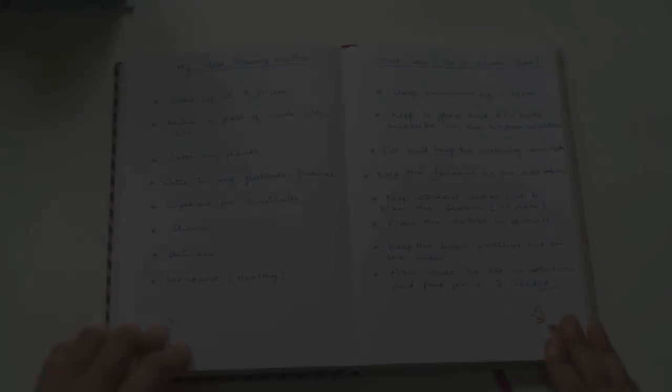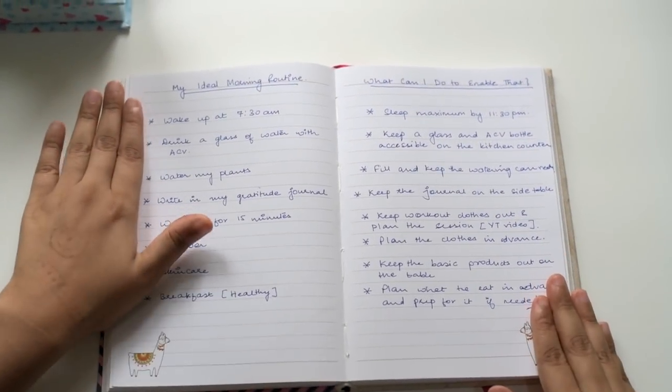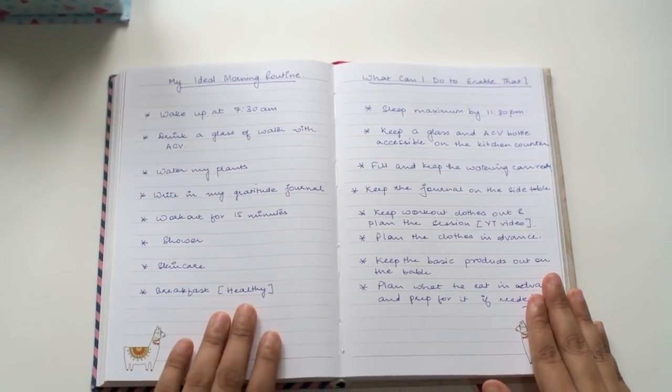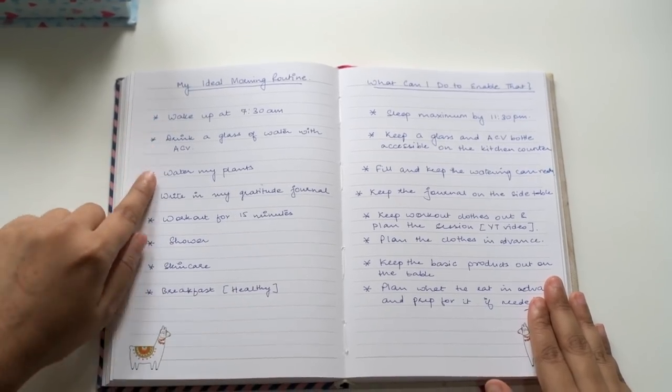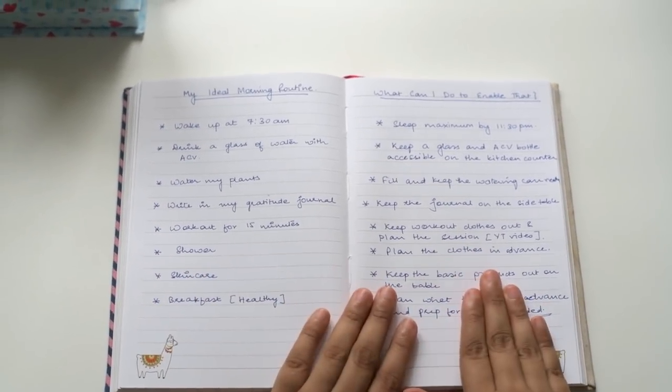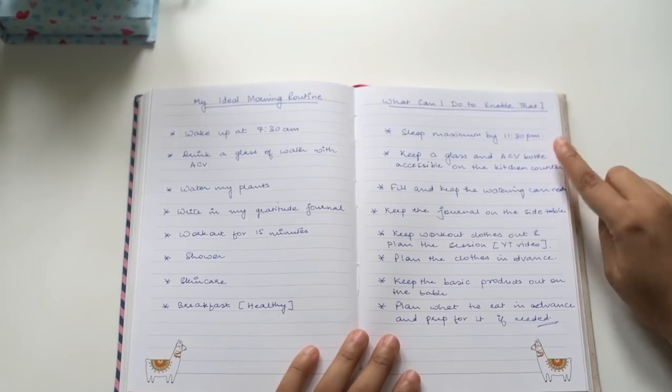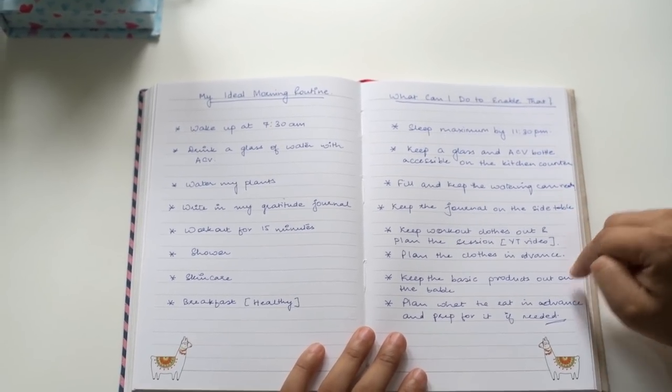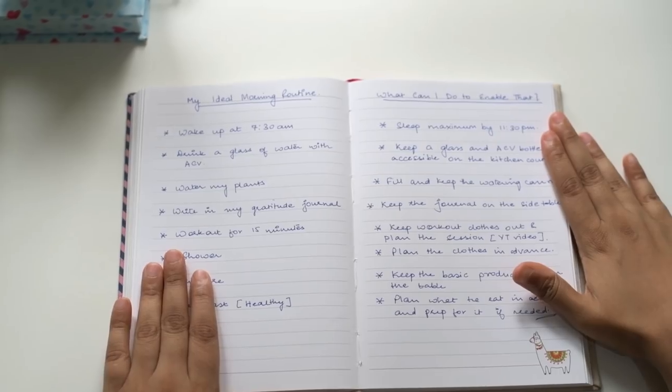So now that you have your list of enablers ready, you will see that for every single item that you have in your ideal morning routine can be achieved by just doing a simple step that you've written down on the right hand side of your page. Now this right hand side of the page will serve as a guideline for you to stick to your morning routine in the long term.